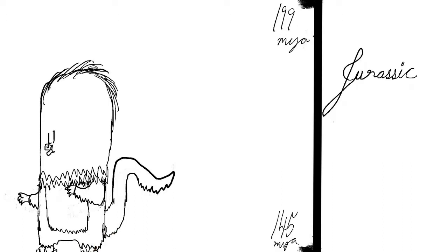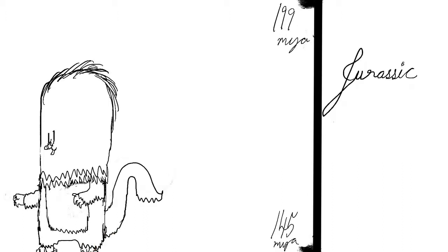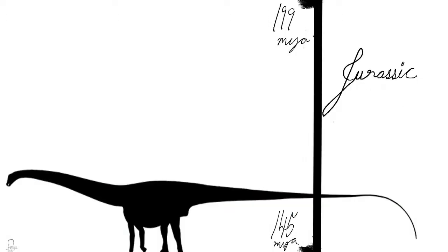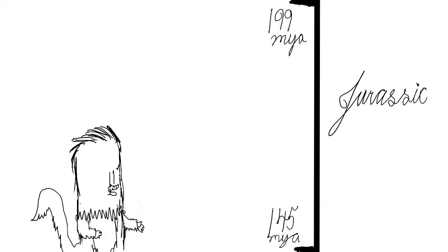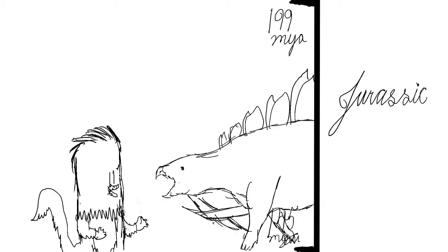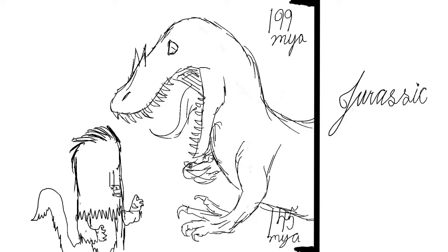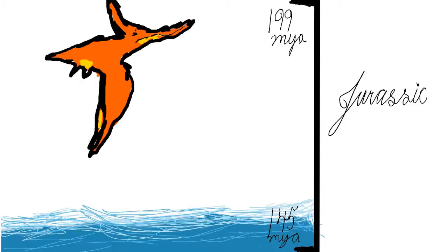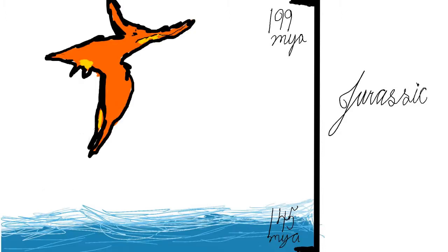After the Triassic came the Jurassic — the period when dinosaurs reached their largest. Giants of the sauropod family like Brachiosaurus, Diplodocus, and Amphicoelias lived during this period, along with many other dinosaurs like Stegosaurus and Allosaurus. Life in the Jurassic was at its grandest — not only for the dinosaurs. In the skies, pterosaurs flew, and plesiosaurs swam in the oceans.